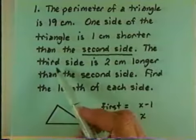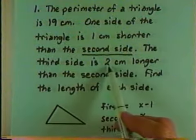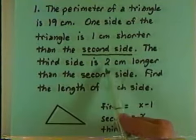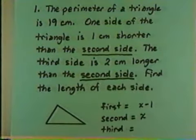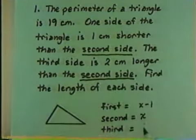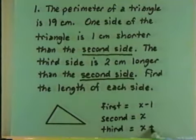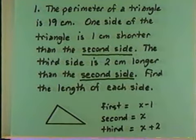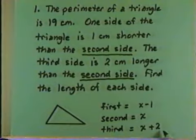Now the third side. The third side is two centimeters longer than — two more than — the second side, which means we will add two. Two centimeters longer than the second side will be x plus two. This gives us a formula for each of the three sides: x minus one for the first, x for the second, and x plus two for the third.